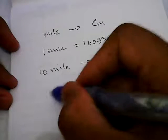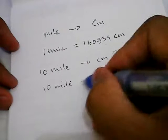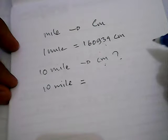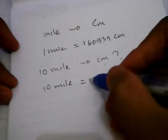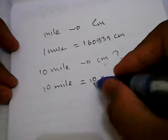...10 miles again, so I need to write this 10 miles, okay? And then give an equal sign. And then I put this 10 over here. 10 miles - I need to multiply this 10 with this...